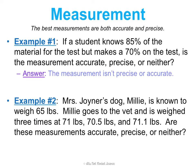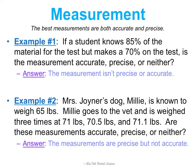Another example: Ms. Joyner's dog, Millie, is known to weigh 65 pounds. Millie goes to the vet and is weighed three times at 71 pounds, 70.5, and 71.1 pounds. Are these measurements accurate, precise, or neither? They're precise because they're consistent — all three measurements are pretty close to each other — but they're not accurate. The accepted value for her weight is 65 pounds, and these experimental measurements are not close to that. They are not correct.